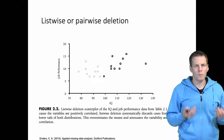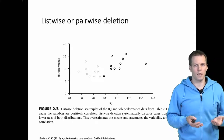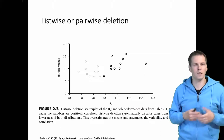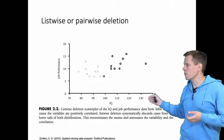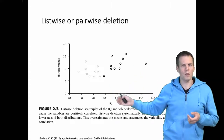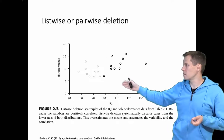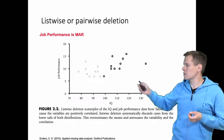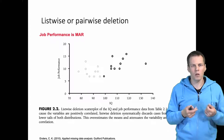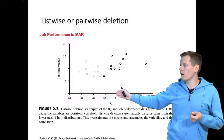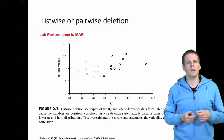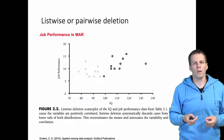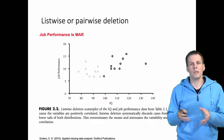Let's take a look at what these simple techniques do. We'll start with list-wise deletion or pair-wise deletion. The data come from Ender's book and we have IQ scores and job performance scores, where the missing data is in the job performance variable. The pattern of missingness is such that job performance is missing at random — missingness depends on IQ, so everything below 99 is missing, but it does not depend on job performance itself. This is a scenario where modern techniques work well but some simple techniques do not.